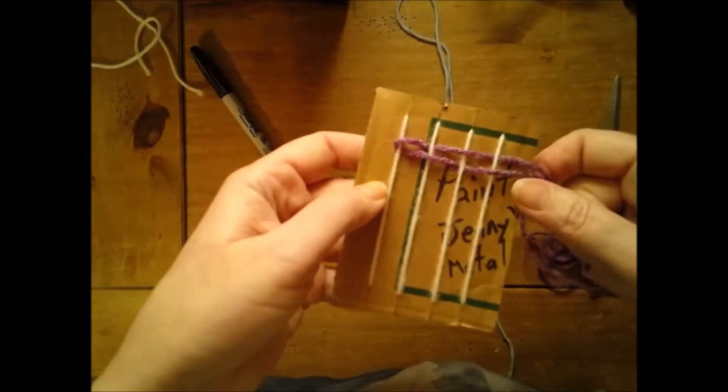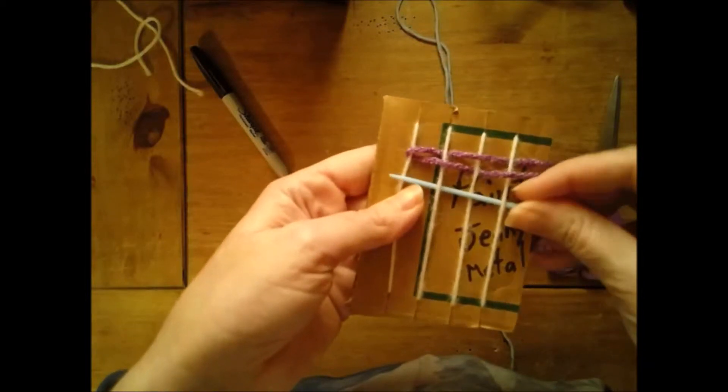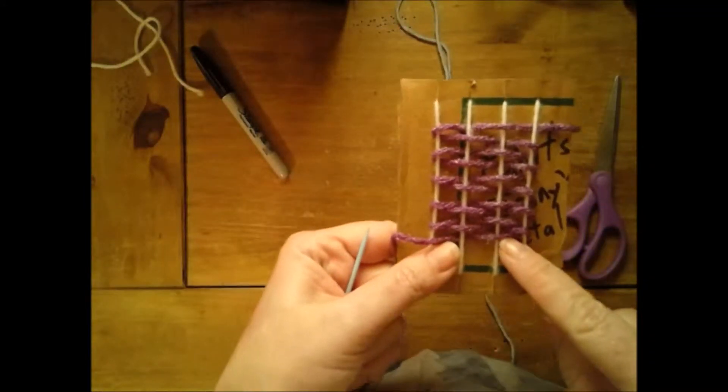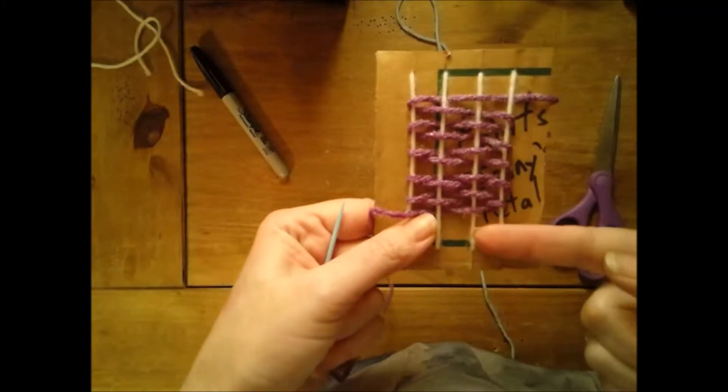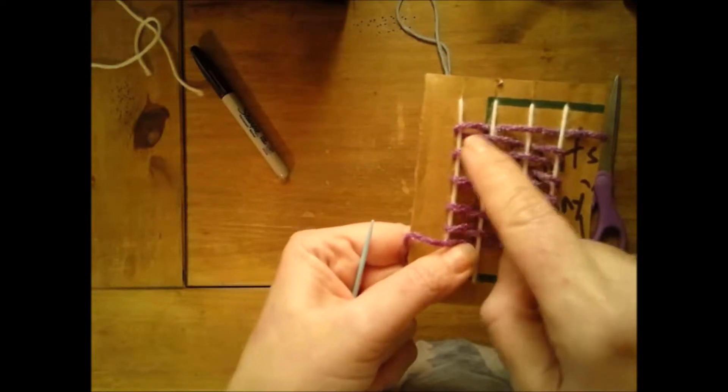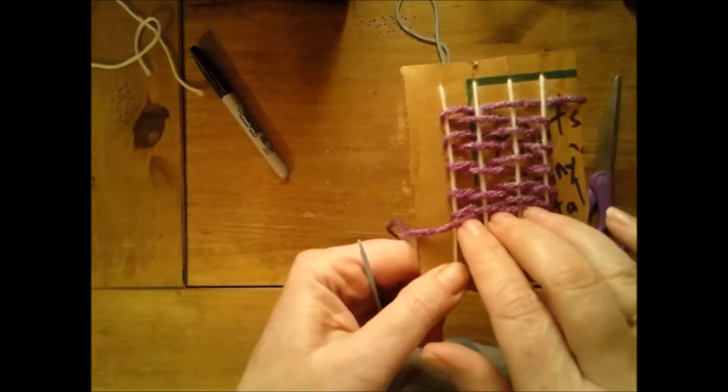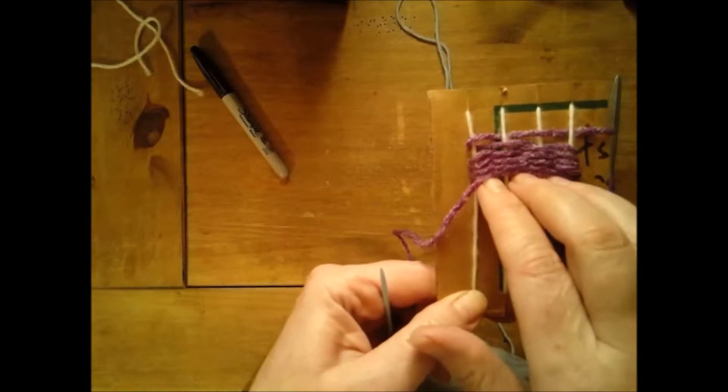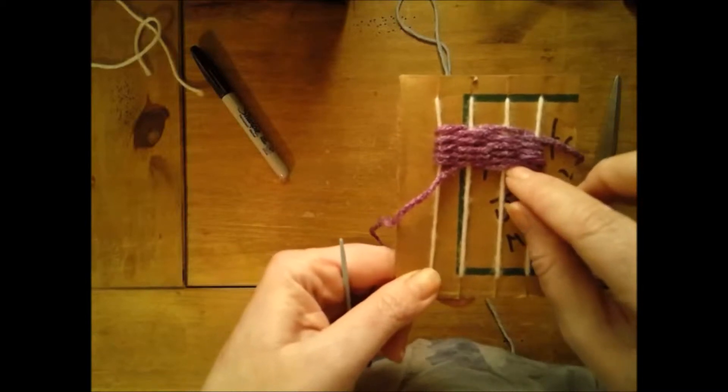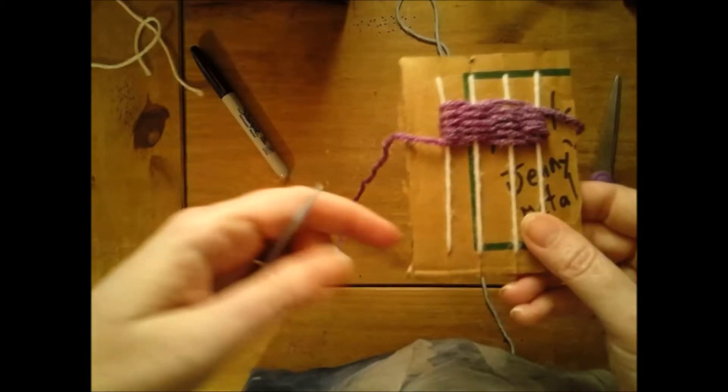So you just keep going like that: under, over, under, over. A lot of people get to this point and they think, 'Oh, I'm finished and I'm ready to take it off my loom,' but you're not quite finished because see all these spaces in between the yarn? That's too much space. So what I'm going to do is take my fingers and push up the yarn so that it's closer together. You should not see a bunch of space in between the yarn, so I still am only halfway through.